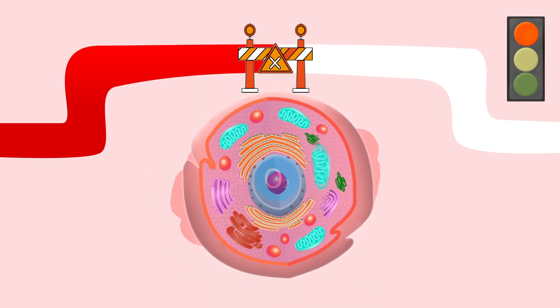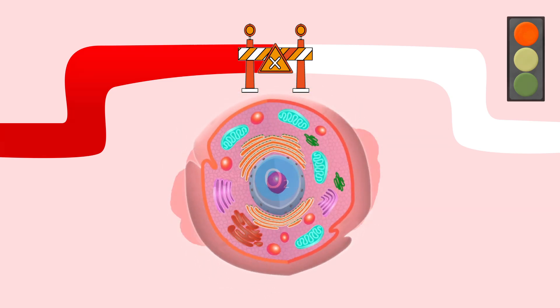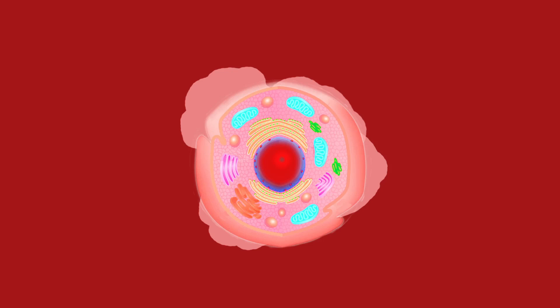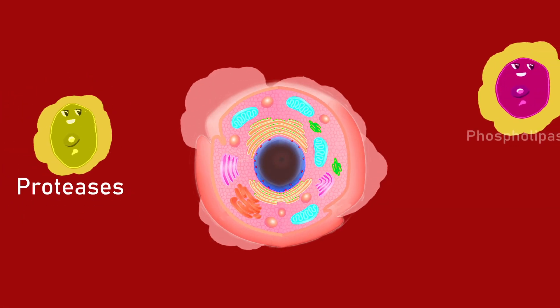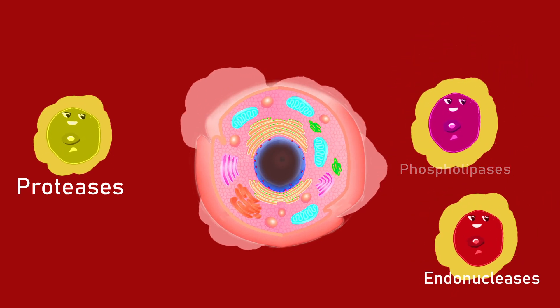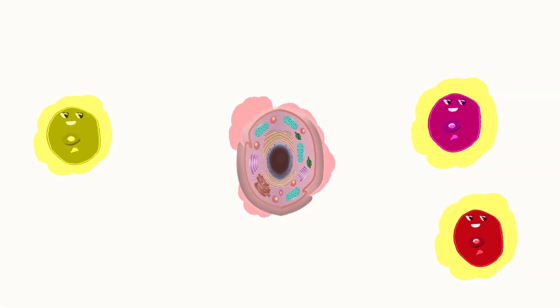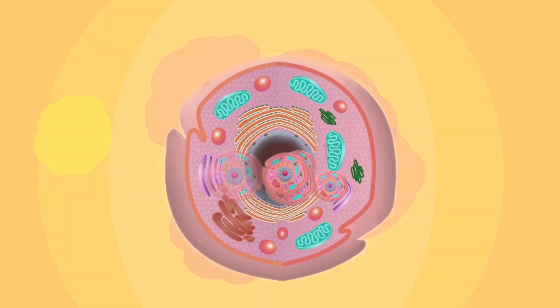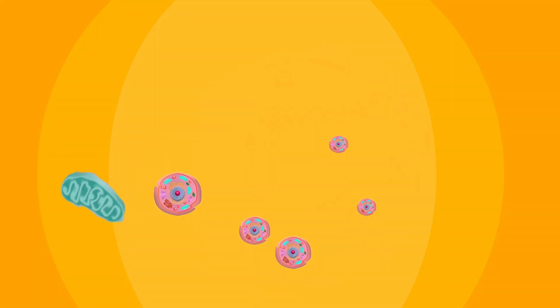Irreversible injury causes severe swelling of the mitochondria due to increased mitochondrial transition permeability, and also extensive damage to plasma and nuclear membranes due to activation of cellular enzymes such as proteases, phospholipases, and endonucleases. These follow cellular death, which is mainly by necrosis. But apoptosis also happens by the release of proapoptotic molecules like cytochrome C from the leaky mitochondria.